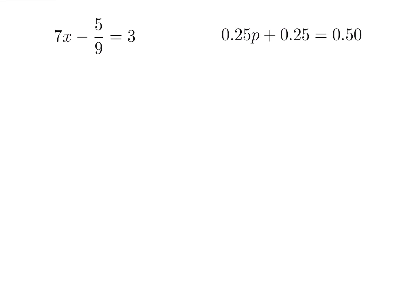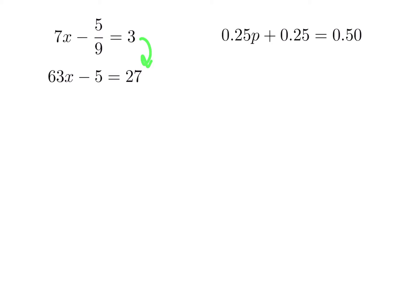Now we solve the next linear equation with the variable multiplied by 7 and a minus 5 over 9. In general, we should multiply across to eliminate fractions when we can. The denominator is 9, so multiplying across by 9 gives us 63x minus 5 equals 27, since 9 times 7 is 63 and 9 times 3 is 27. Adding 5 to both sides and then dividing across by 63 gives x equals 32 over 63.